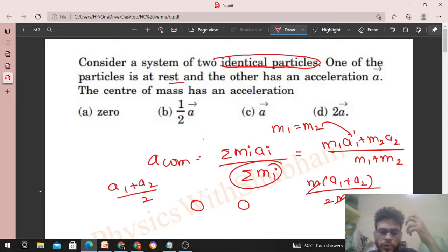Now, it's given that one particle is at rest, so a1 is 0, and a2 is given a. So just substitute the value of a1 and a2 in this equation, you will get a by 2.